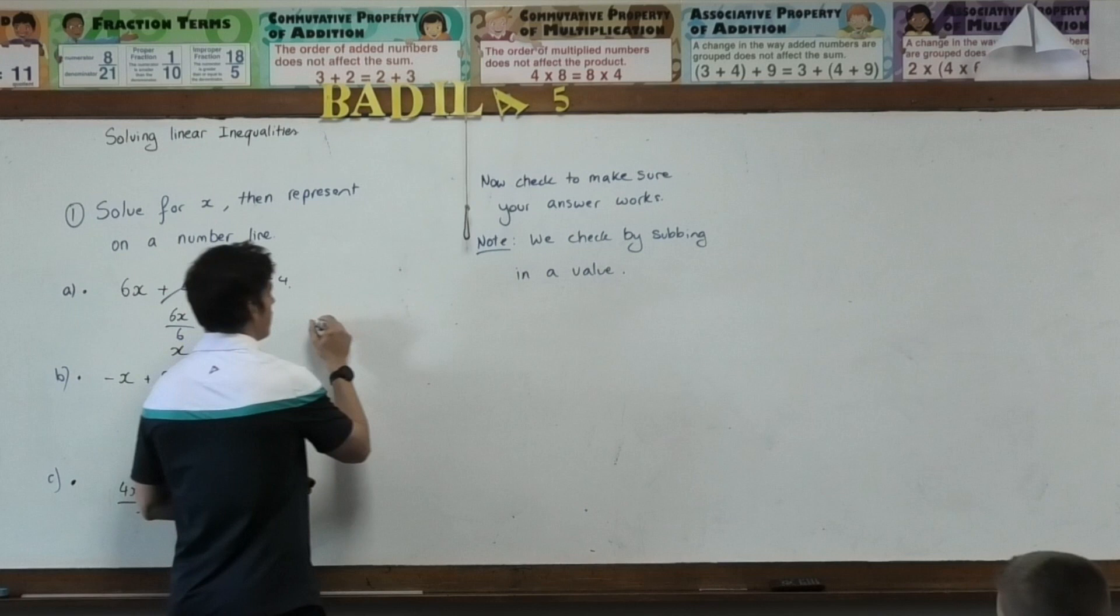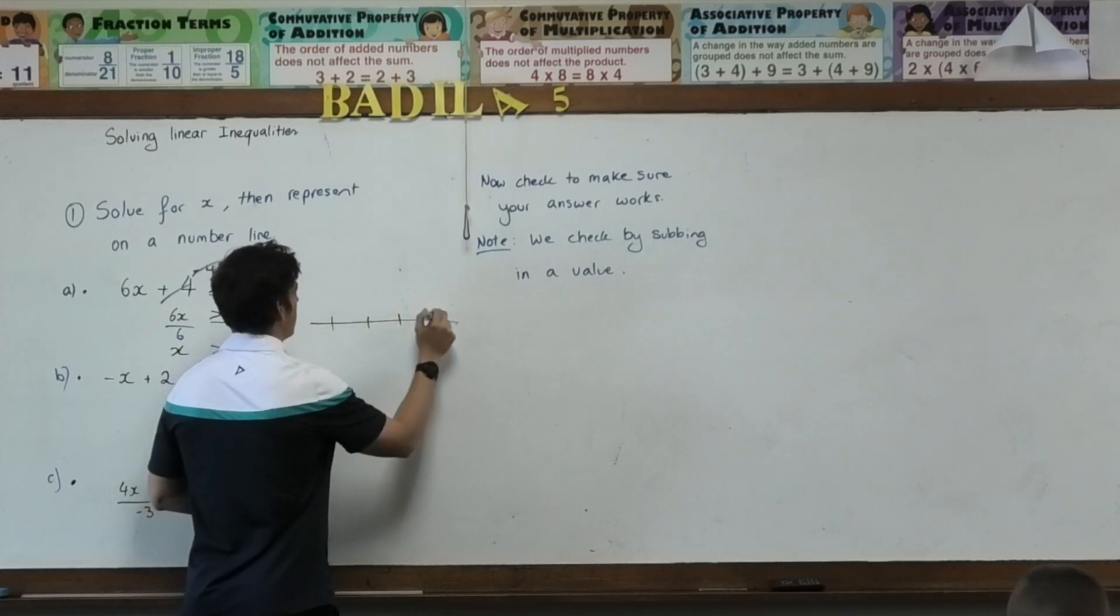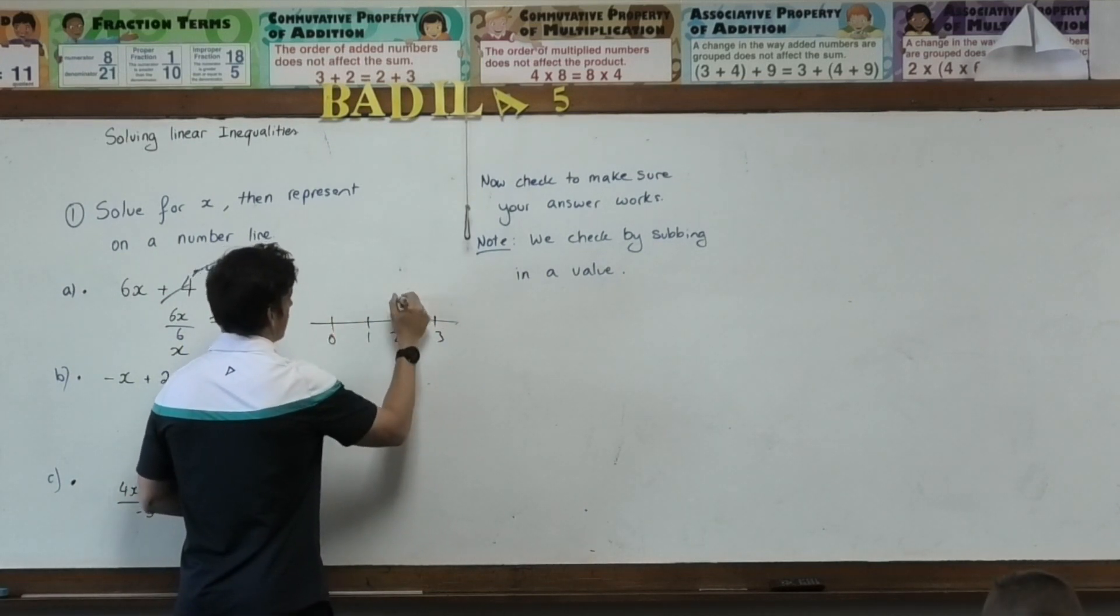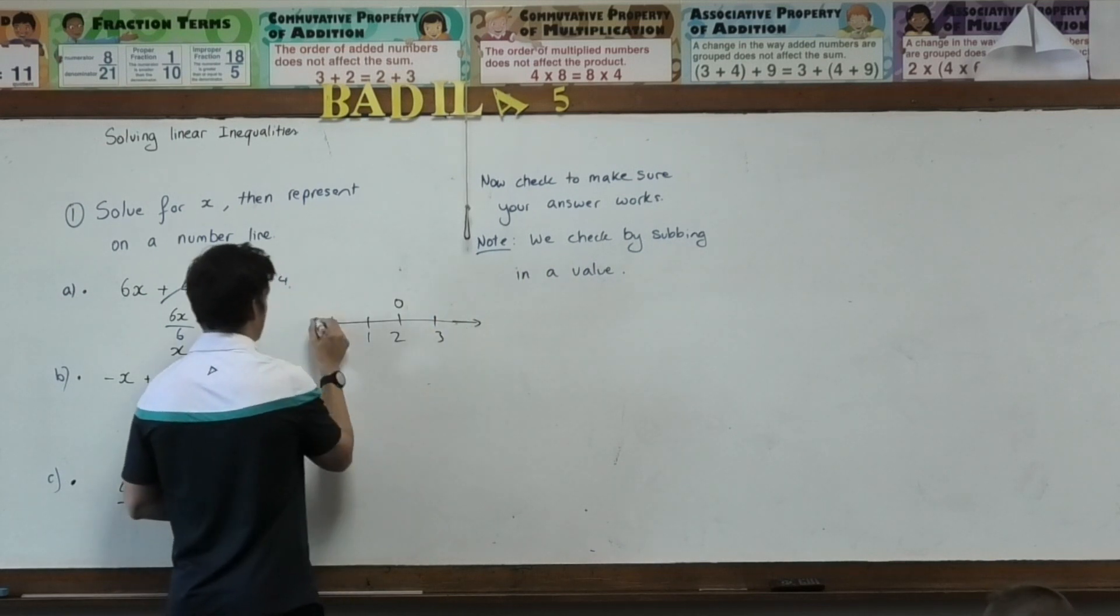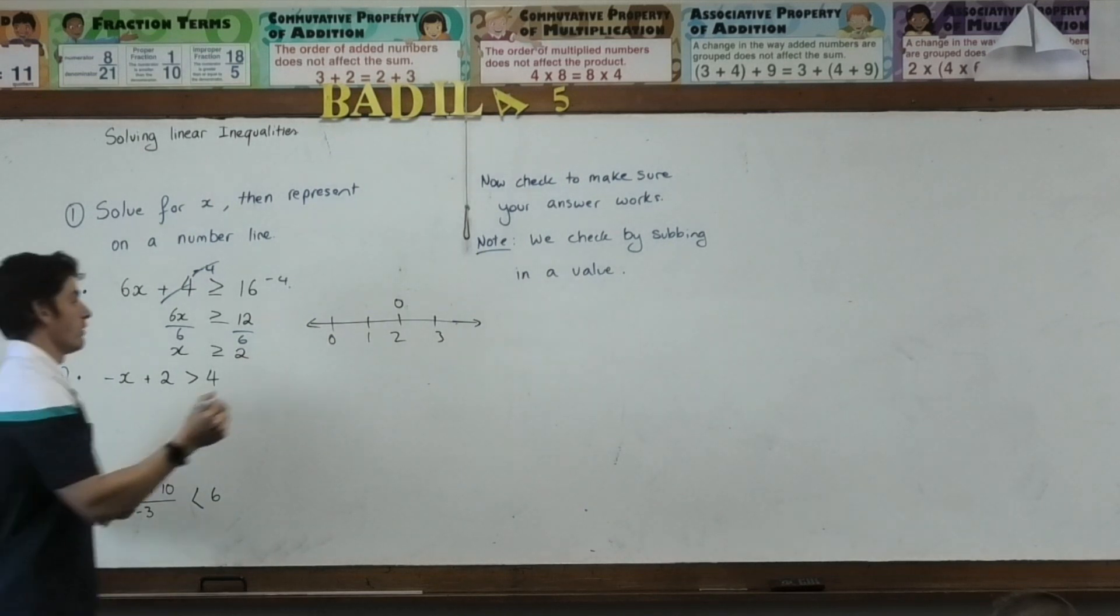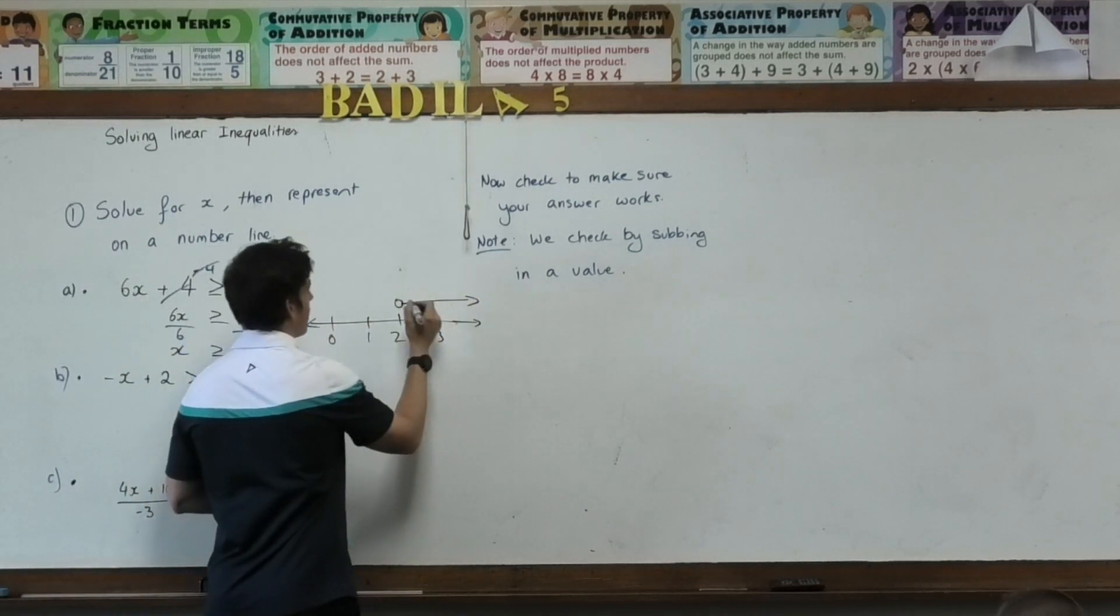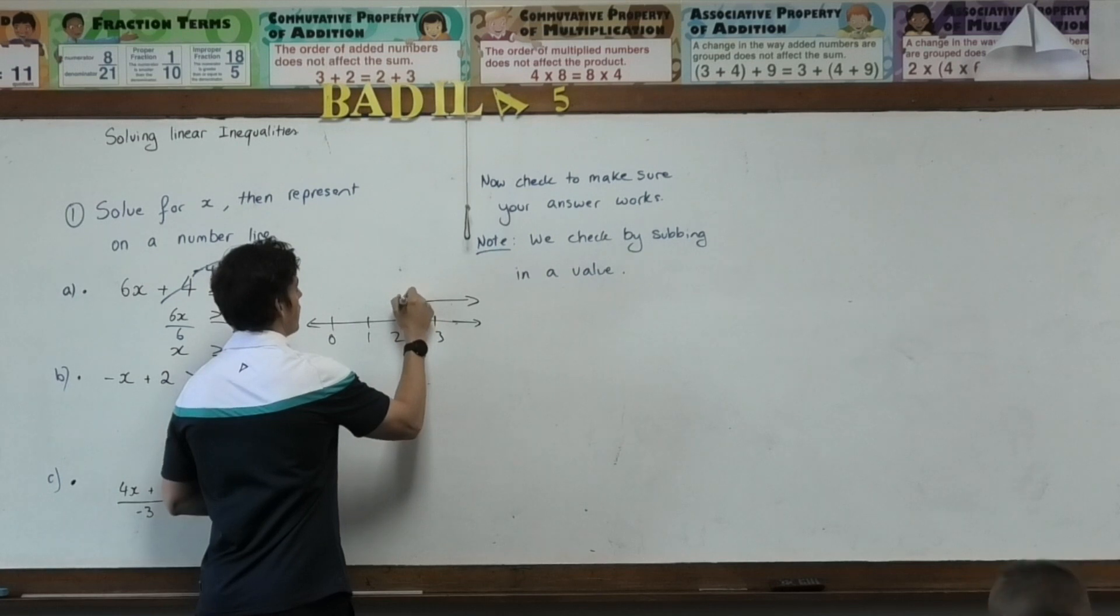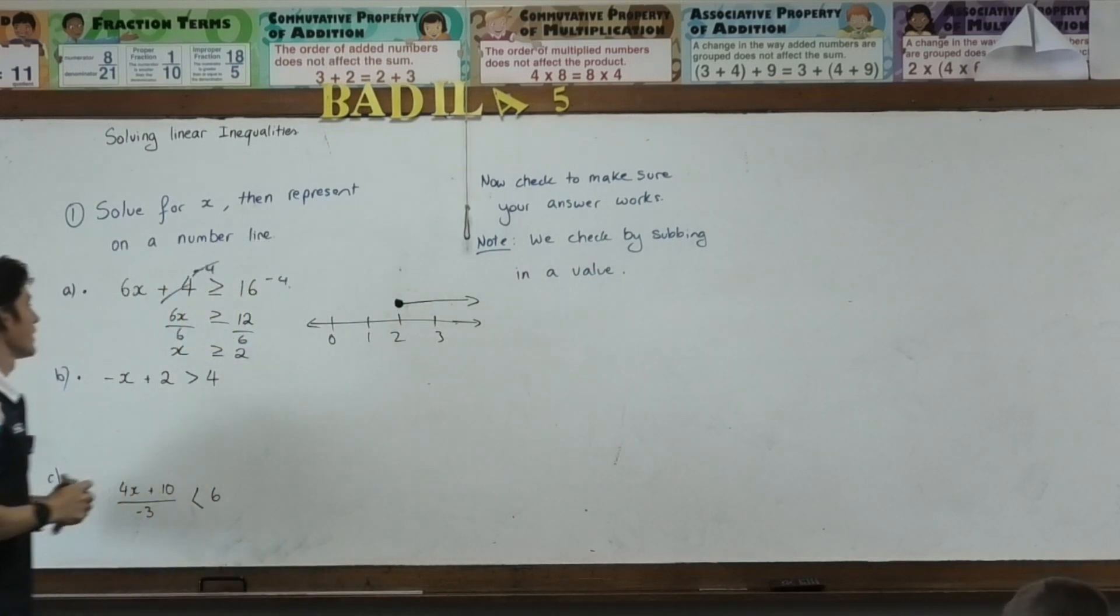On my number line, I'll just set up some numbers. And which way am I going? To the right? Shaded or not shaded? Shaded. Very good. I'll check that in a second, but does that make sense?